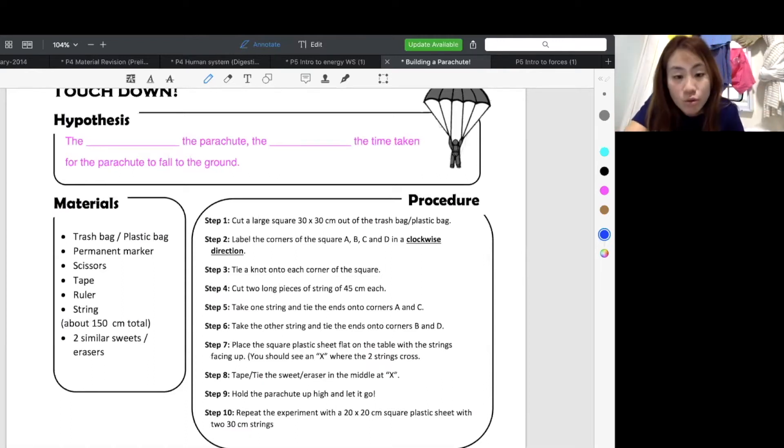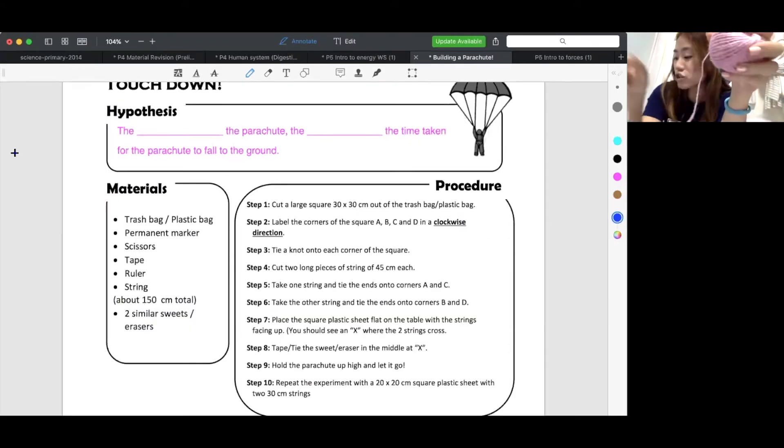For those of you who are done, you might want to cut out your strings. So you've got to cut 2 long pieces of string, 45 cm each. It needs to be long. Just in case, because it cannot be too short. If it's too short, your parachute will not be able to form. So just measure about 45 cm and then you cut it.